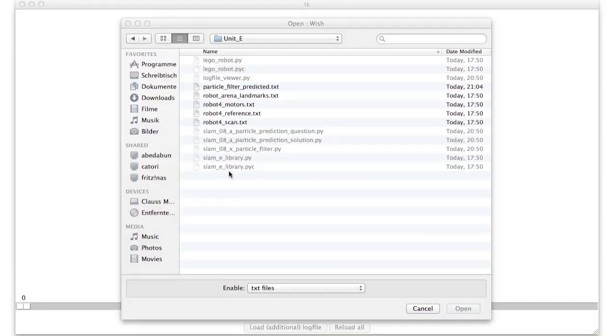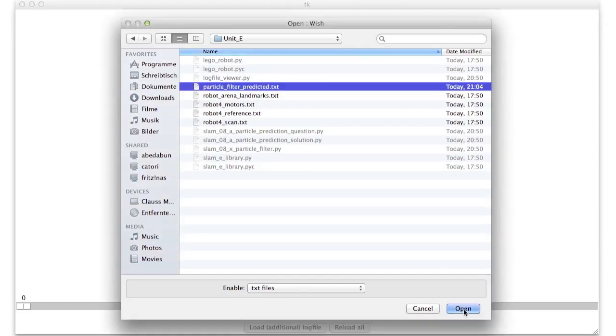So now you'll have to implement this predict function up here. So after you implemented this, run it, and it will write a log file called particle filter predicted.